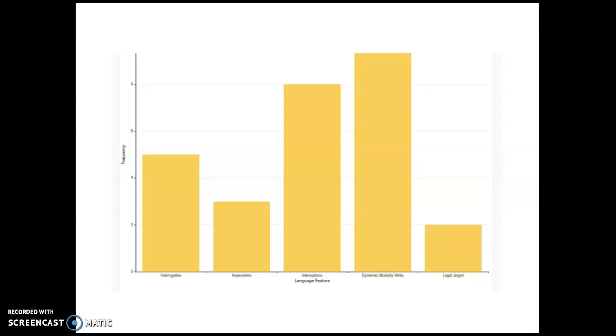I'll show you one last example. This was from the student who did an investigation into police language and stop and searches. And he's got a bar chart there from data set one, five interrogatives, three imperatives, eight interruptions, nine epistemic modal verbs, and two uses of legal jargon he found in his. And that actually subverted his hypothesis. He expected that it'd be far more imperatives and far more deontic modal verbs. But he found actually the police used less of those to maintain an impression of politeness.